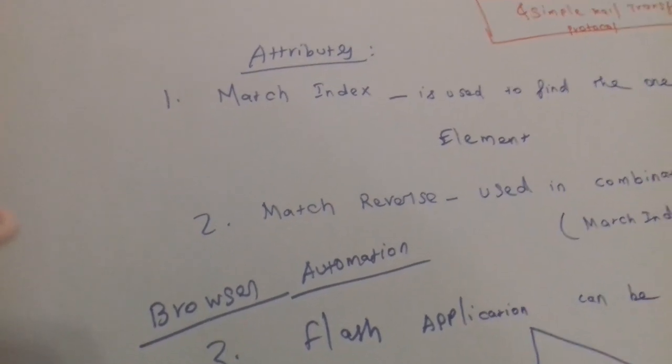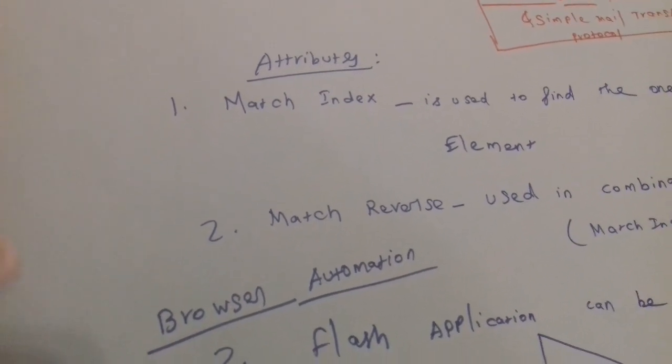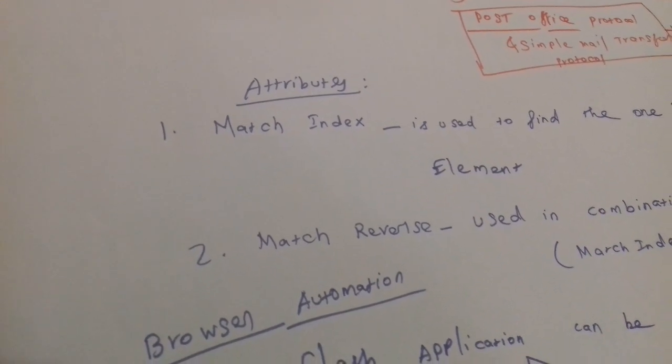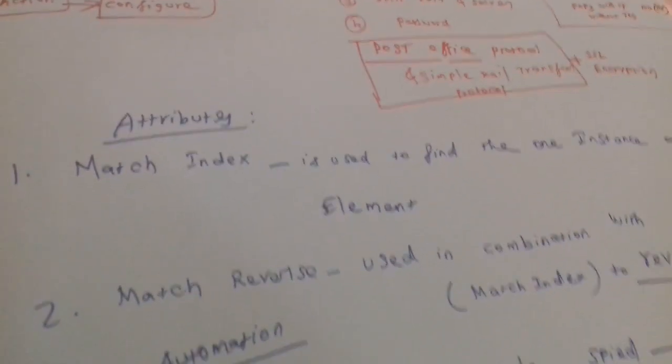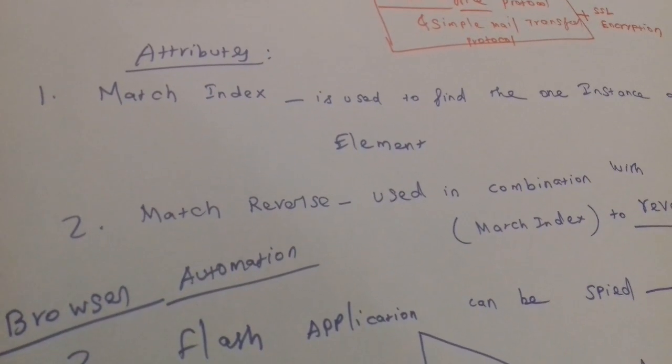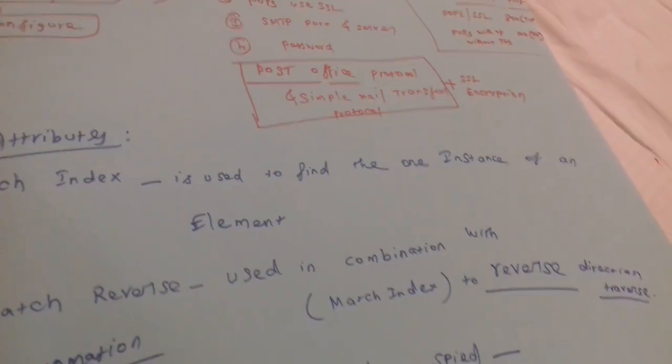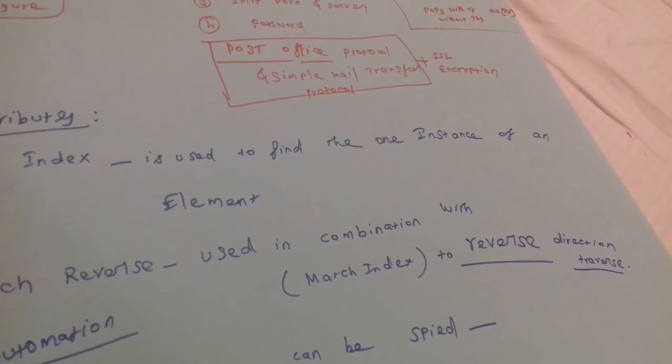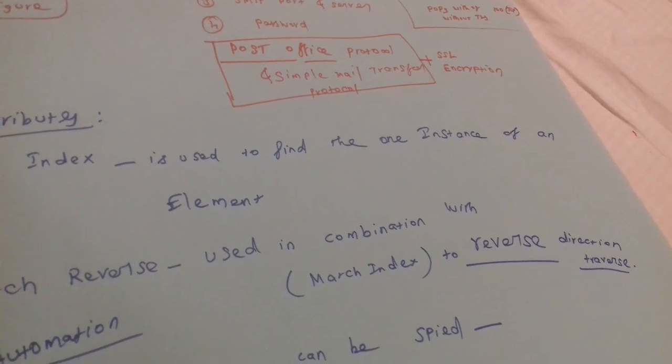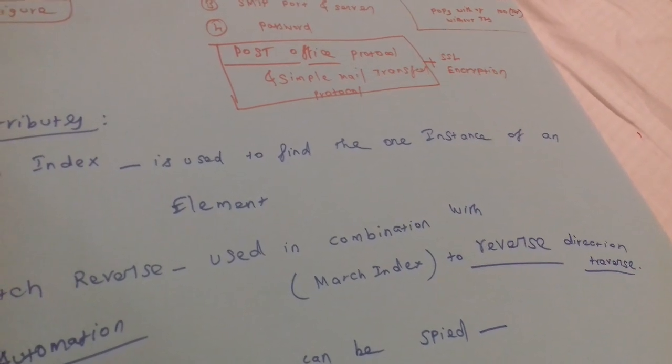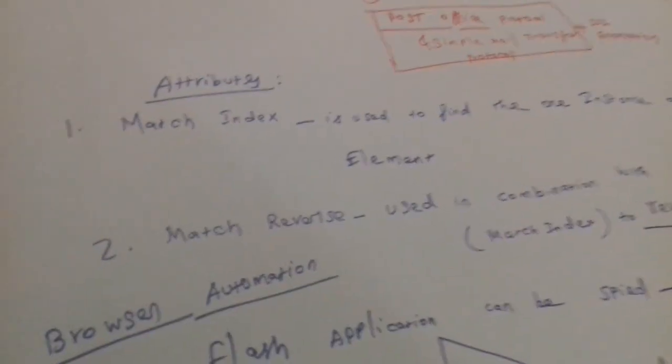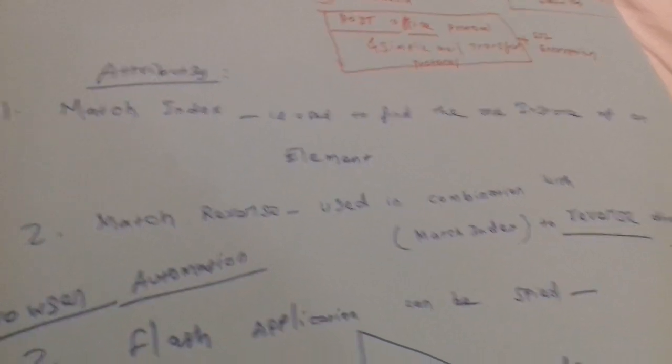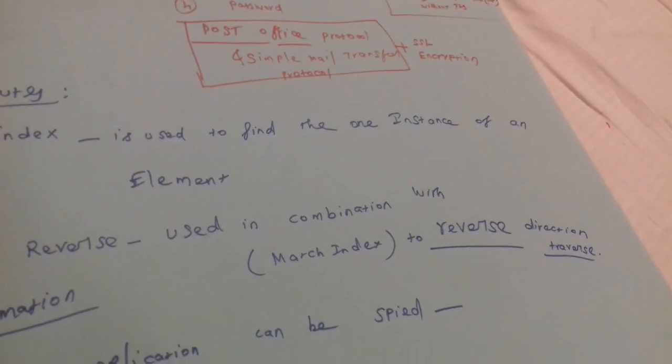Today we'll see some best practices of Blue Prism. When you use attributes in Blue Prism, Match Index is used to find one instance of an element, only one instance of an element. When you use Match Reverse, it's used in combination